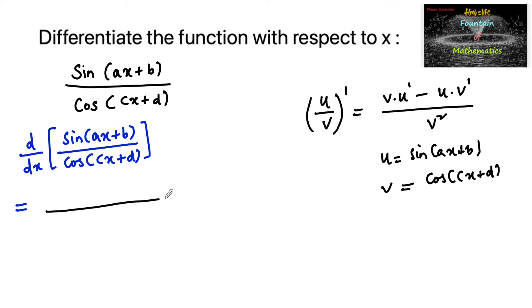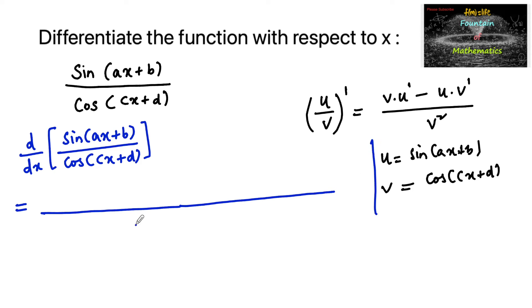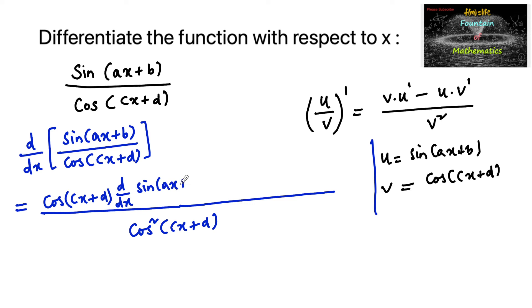So we can write: upon cos squared(cx + d), cos(cx + d) into d/dx of sin(ax + b), minus sin(ax + b) into d/dx of cos(cx + d).